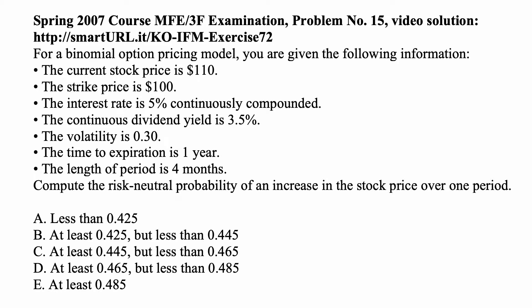Here's the problem for today for Exam IFM, Investments and Financial Markets. For a binomial option pricing model, you are given the following information: the current stock price is $110.00, the strike price is $100.00, the interest rate is 5% continuously compounded, the continuous dividend yield is 3.5%, the volatility is 0.30, the time to expiration is one year, and the length of each period is four months. Compute the risk-neutral probability of an increase in the stock price over one period.